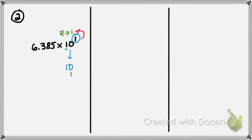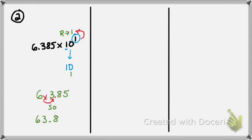So I take the number that's not the base 10 number and write it down: 6.385. I know I'm going to move my decimal one place to the right — cross it out, move it one place to the right, and there it is. My answer is 63.85. 63 and 85 hundredths is my final answer for number 2.